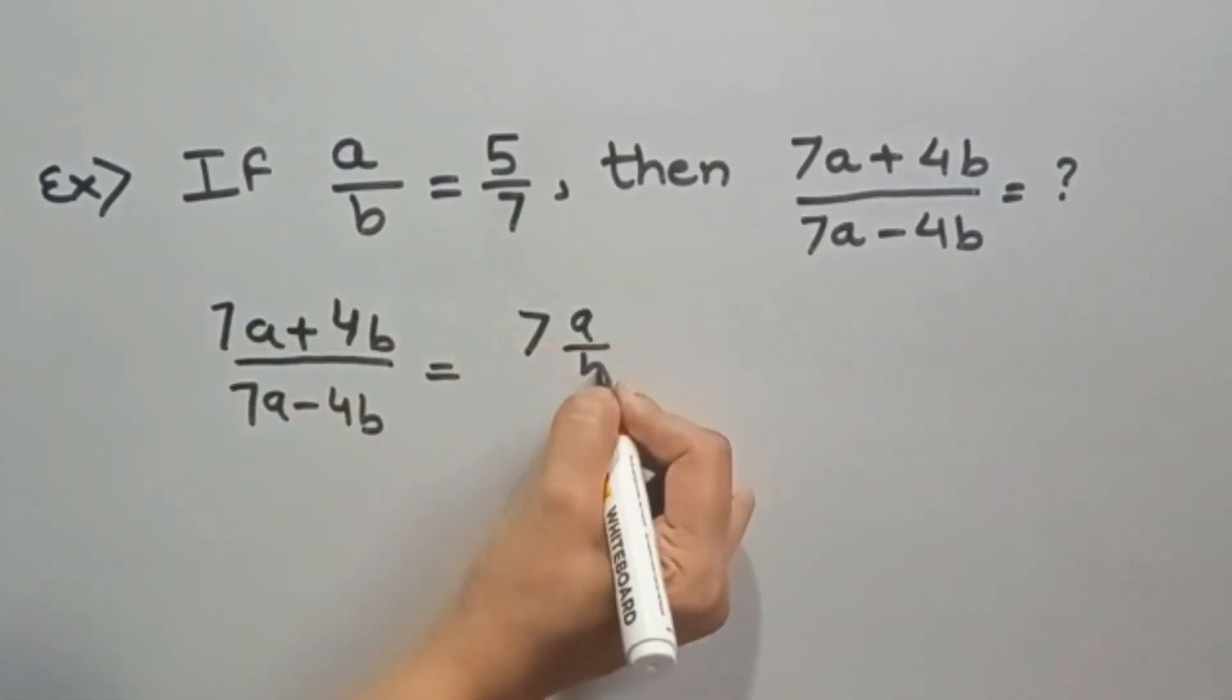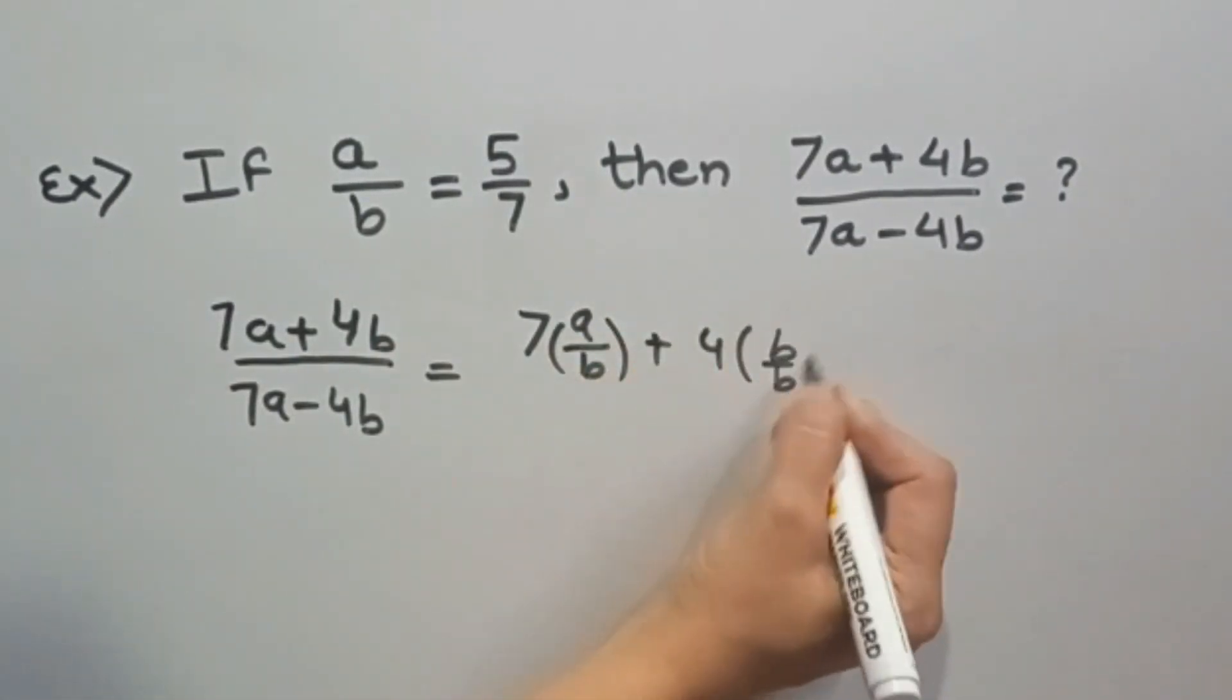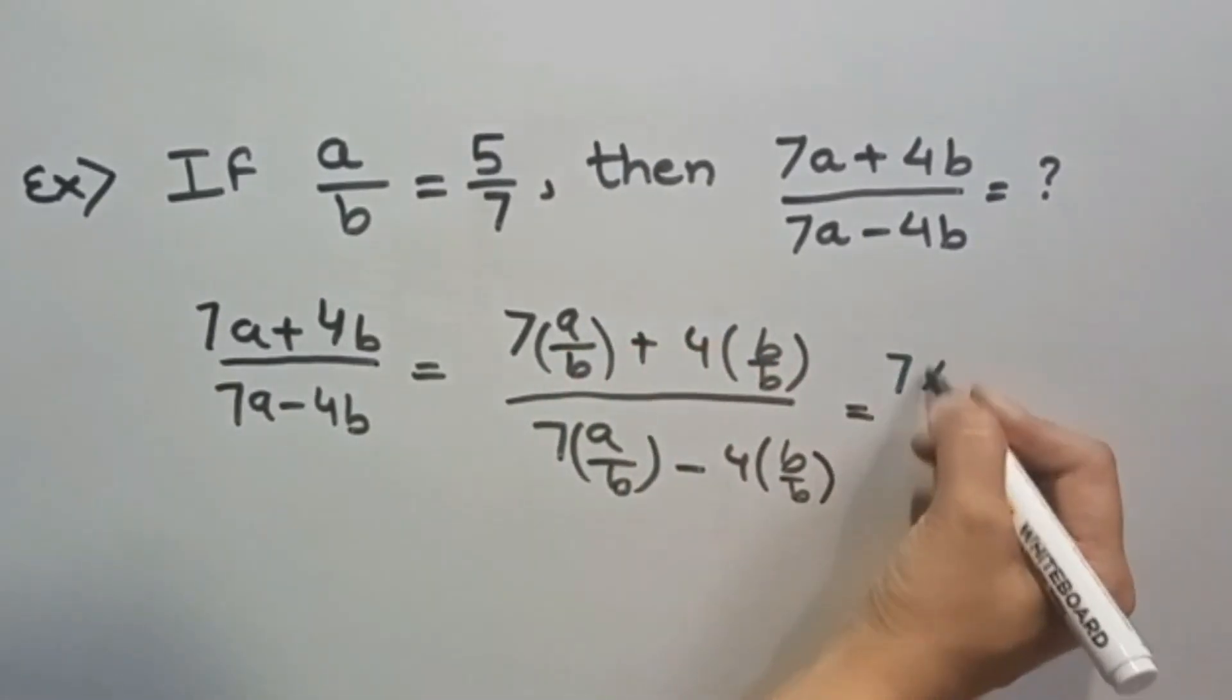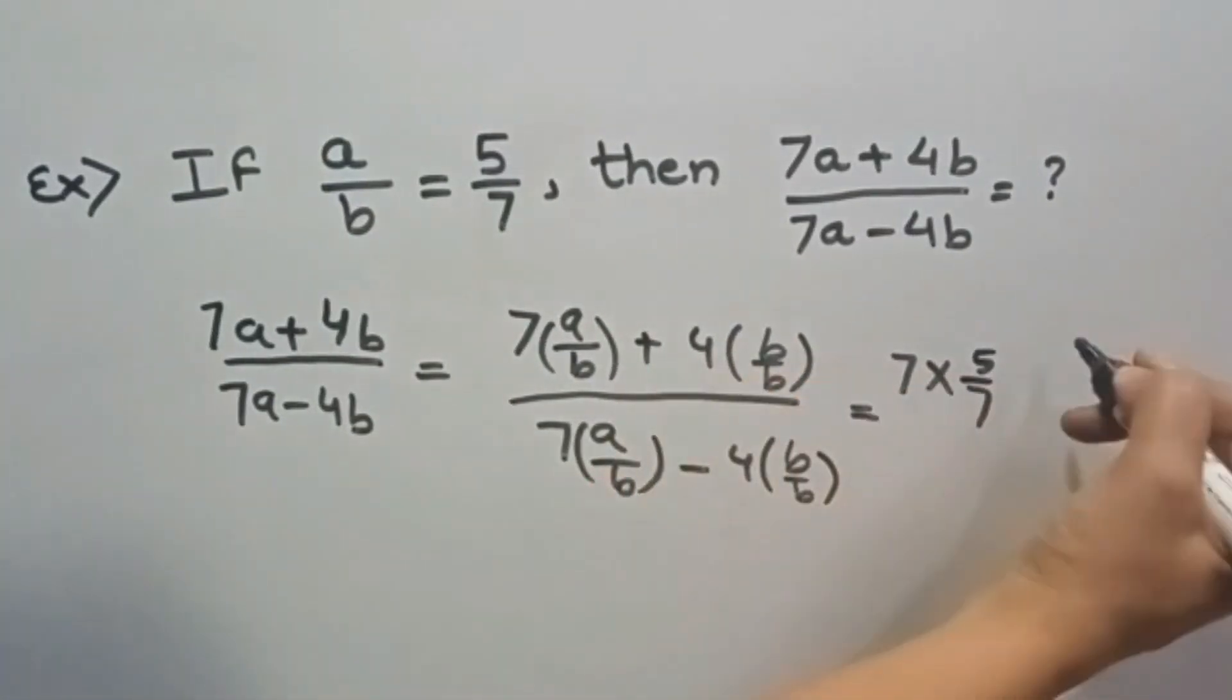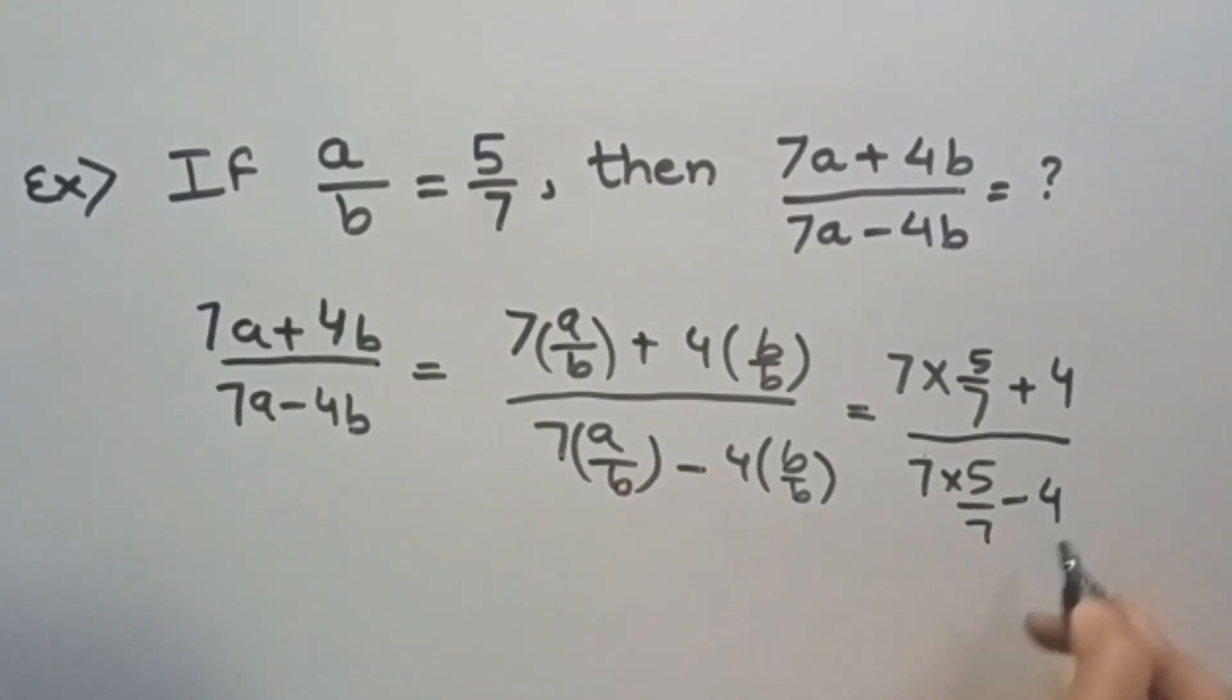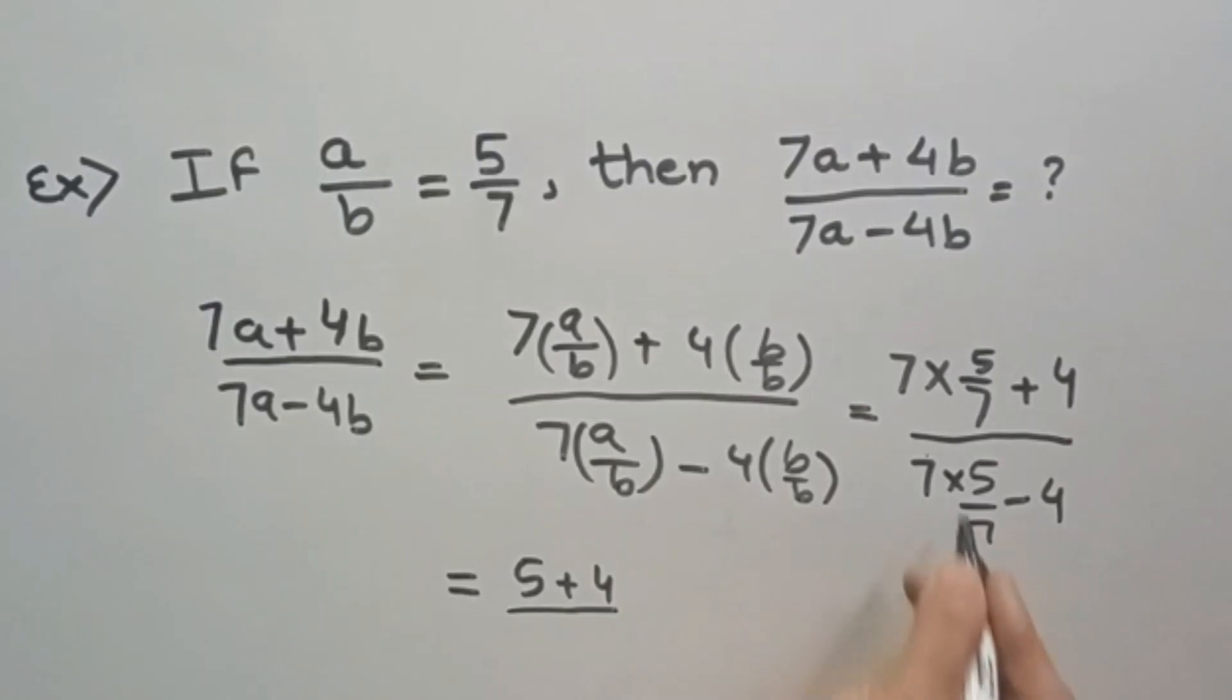7a upon b, so 7a upon b plus 4b upon b. This is 7 into a by b. Value of a by b is 5 by 7. I will put the value of a by b plus 4. B upon b is 1, divided by 7 into 5 by 7 minus 4. 7 cancels with 7, so 5 plus 4 upon 5 minus 4, which is 9 by 1, which is 9.